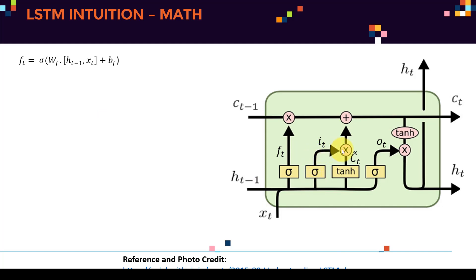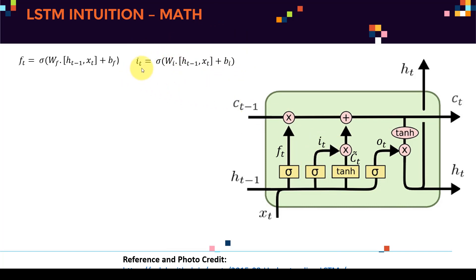For the input gate it: similarly, take ht-1 and xt, multiply by a new independent set of weights Wi, add bias bi, and apply a sigmoid activation function. This generates the next control gate. Then for ct-bar: take ht-1 and xt, multiply by weight Wc, add bias bc — exactly the same structure as before — but apply the hyperbolic tangent (tanh) instead of sigmoid, generating ct-bar.